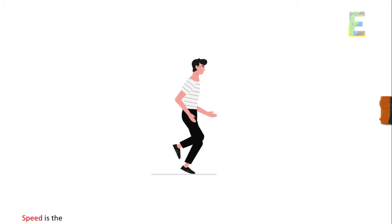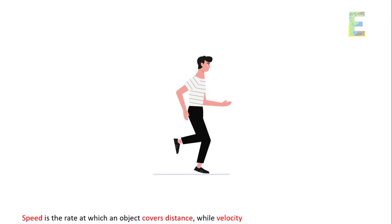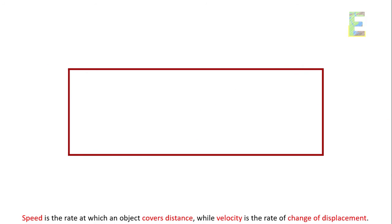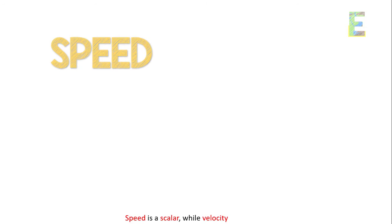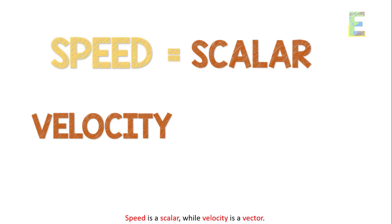Speed and velocity. Speed is the rate at which an object covers distance, while velocity is the rate of change of displacement. Speed is a scalar, while velocity is a vector.